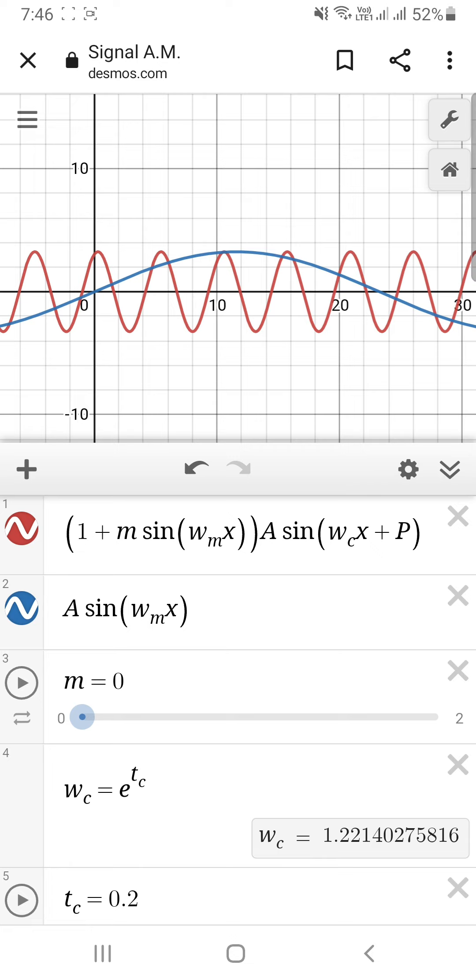You just have the original carrier wave, which is just normal sinusoidal. But then when you start to increase your m, this wave starts to deform and it tries to take the shape of this blue curve.